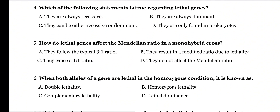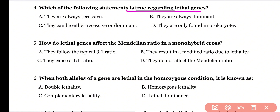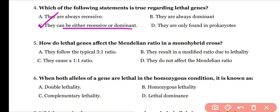Question 4: Which of the following statements is true regarding lethal genes? They are always recessive; they are always dominant; they can be either recessive or dominant; or they are only found in prokaryotes? Correct answer is option C. Lethal genes can be either recessive or dominant.